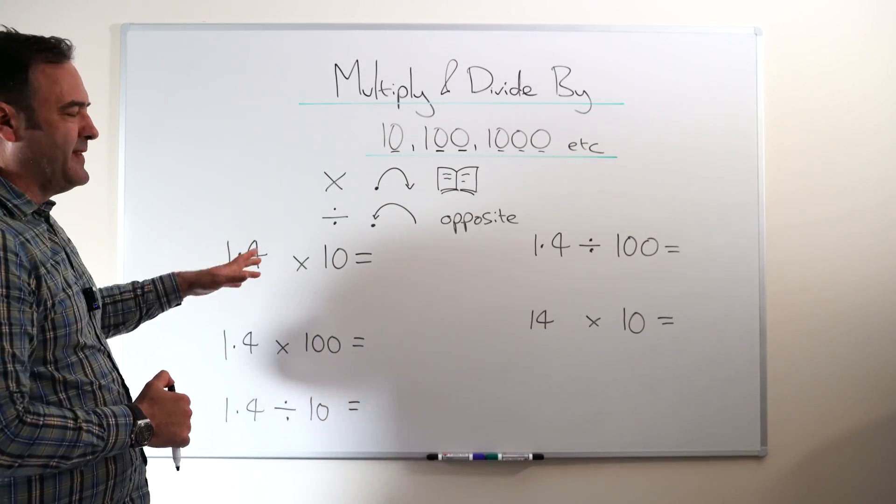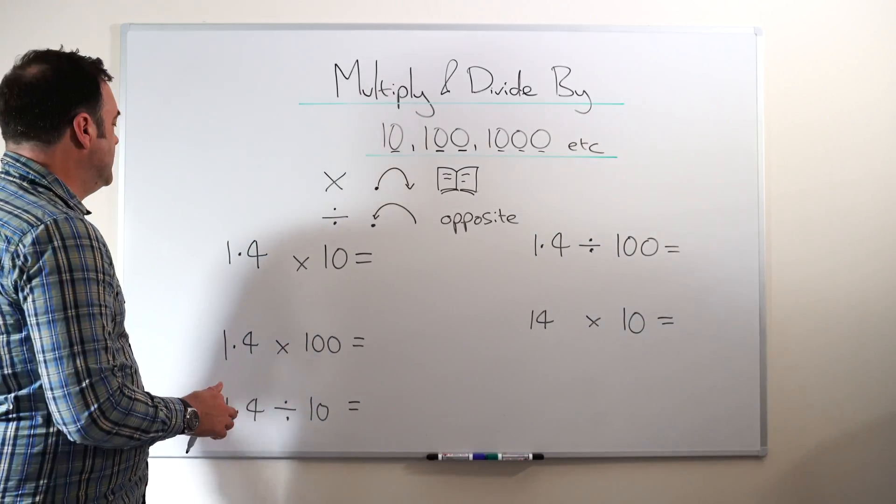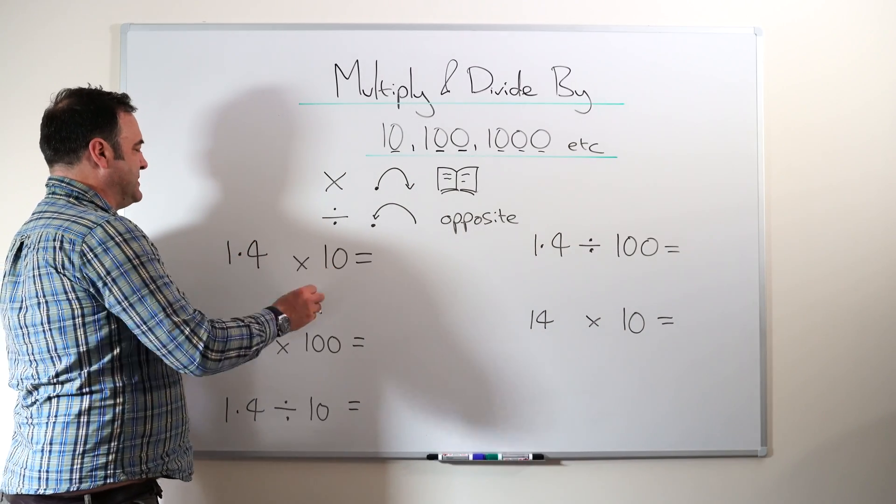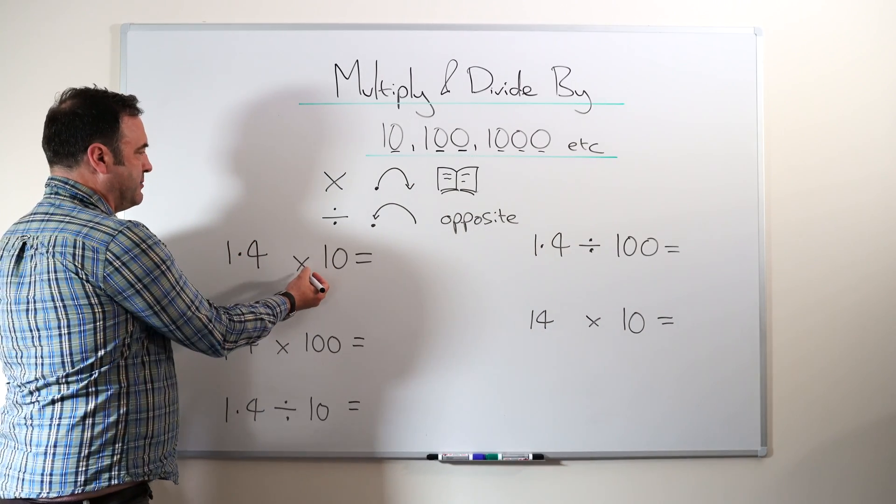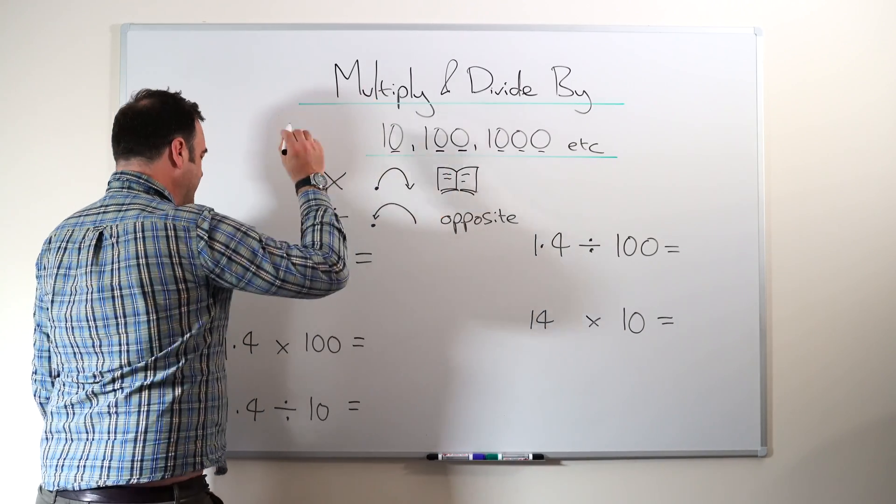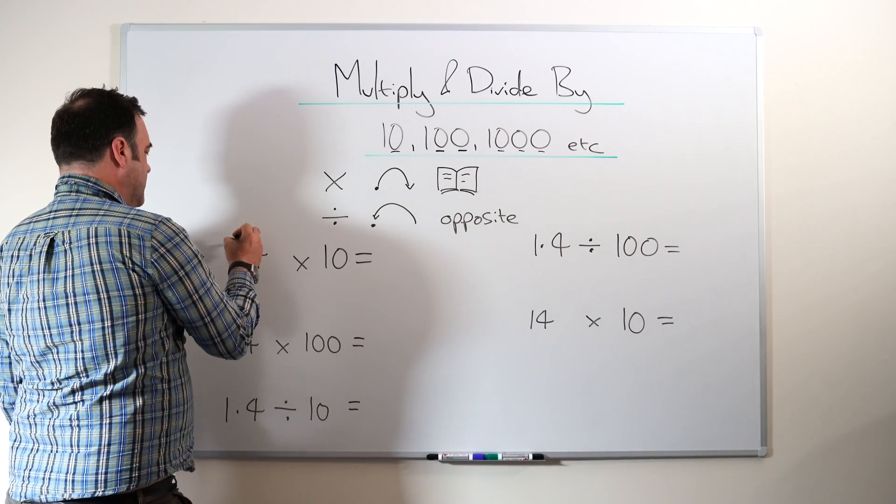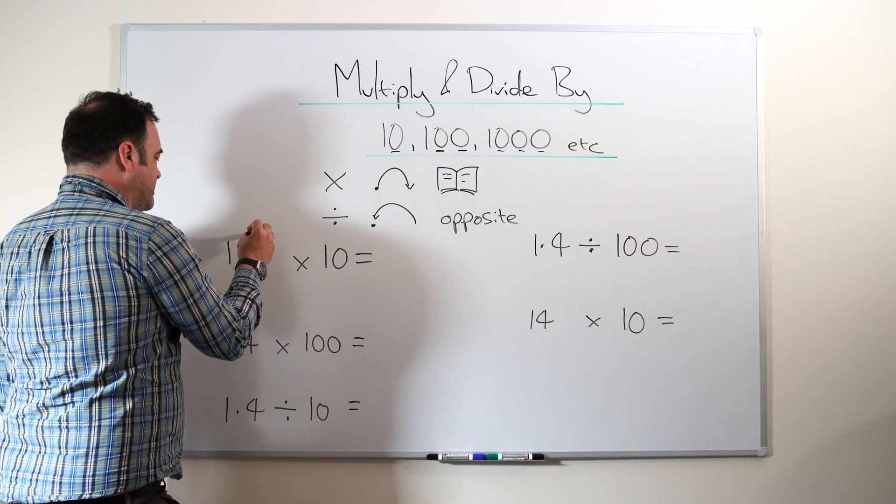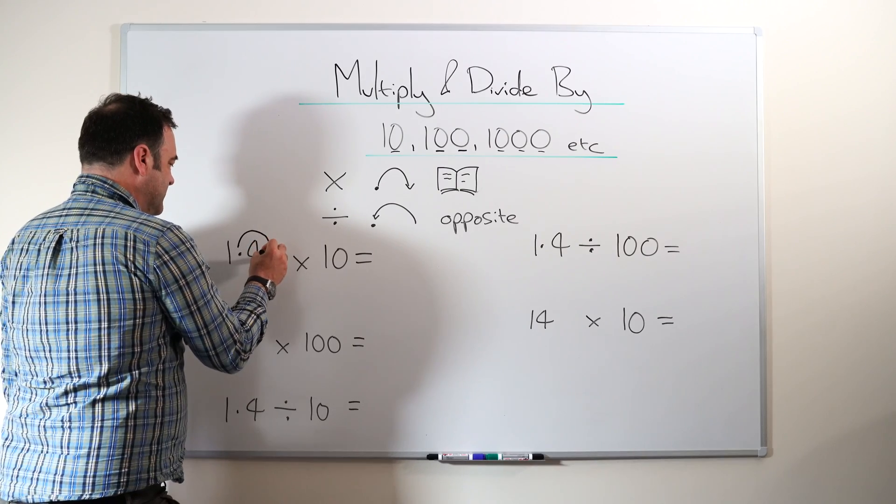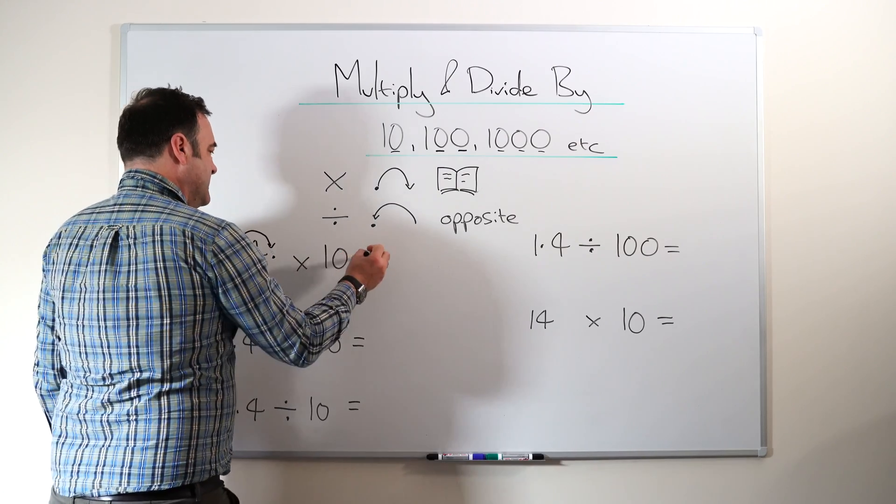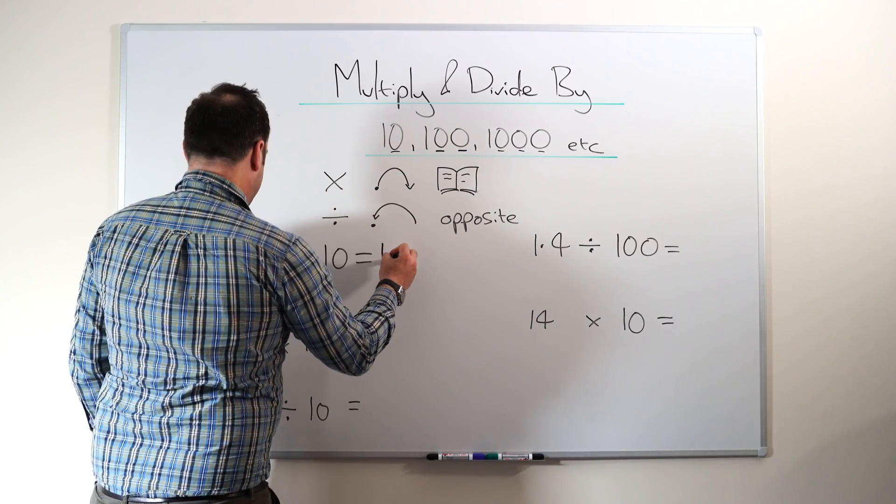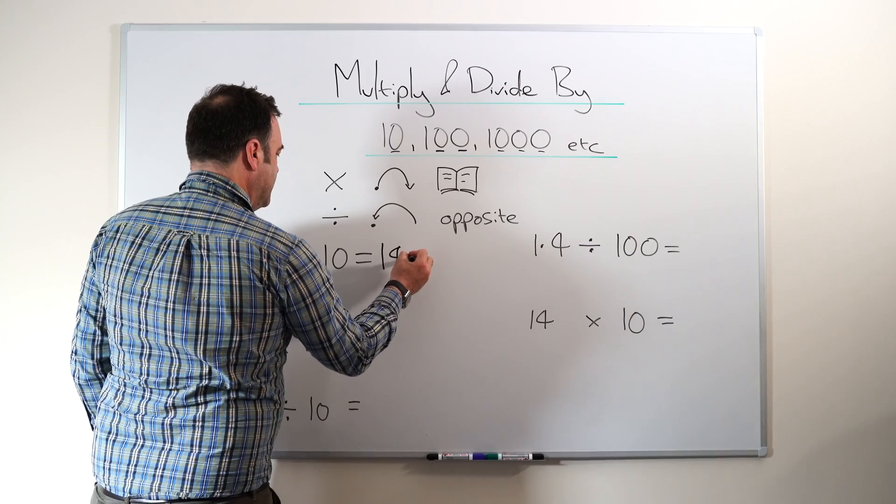So I'm just going to run through some very simple examples. We've got 1.4 times 10. So if we look at this, we've got the multiplier, that means the way we read and write. We've got times 10, so it's one zero, and I even get kids to draw on the jump like this and move it.